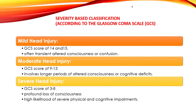We use the Glasgow Coma Scale to classify head injuries based on their severity. A GCS score of 3–8 is a severe injury, which is associated with a profound loss of consciousness and a high likelihood of mortality or severe physical and cognitive impairments.